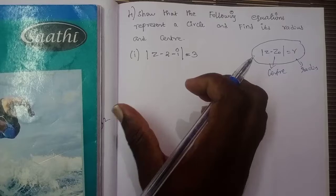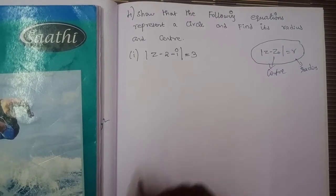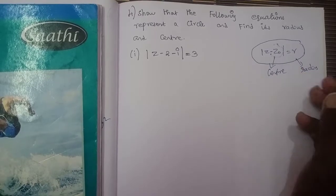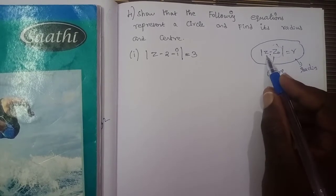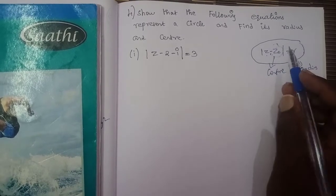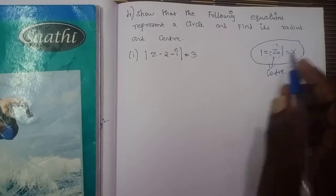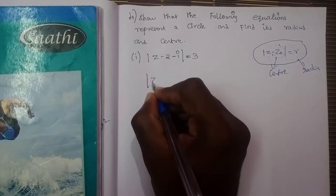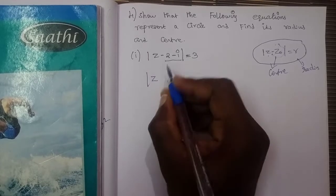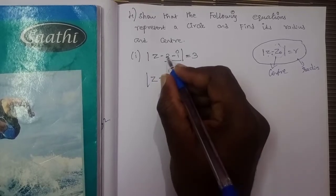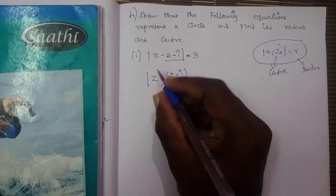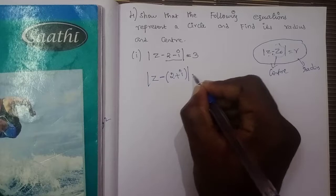This is the first question. For the first sub-division, z₁ is the center. Modulus of z₁ minus z₀ equals r. Taking the common terms: minus of minus is common, and minus is common to r. This gives us 2 plus i, and minus minus is equal to 3.